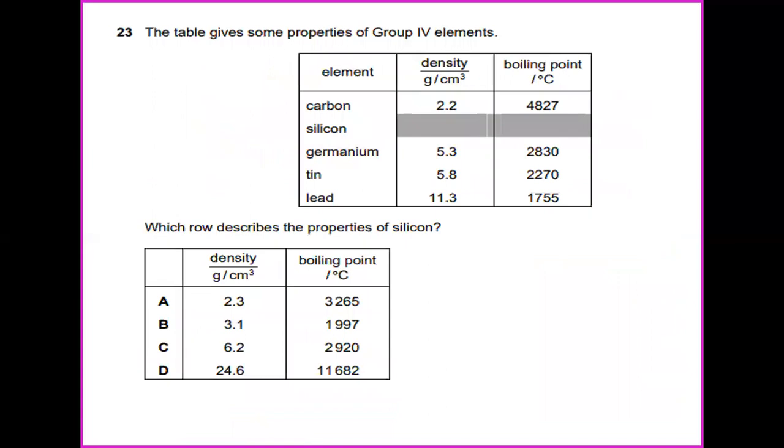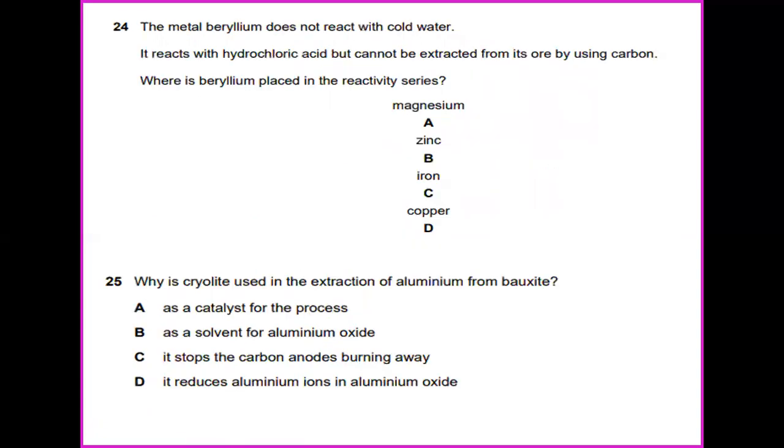Question 23. The table gives some properties of group 4 elements which show or which row describes the properties of silicon. In terms of silicon density and also boiling point, so the answer will be 2.3 grams per cm³ and the boiling point for silicon is 3265 degrees Celsius.